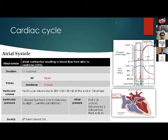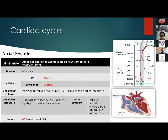Ventricular pressure first increases due to blood moving from the atrium to the ventricle, then slightly decreases. Atrial pressure initially increases due to atrial systole, then decreases due to venous return. This correlates to the fourth heart sound. In patients with atrial fibrillation, this phase is absent. In patients with left ventricular lack of compliance, such as left ventricular hypertrophy or hypertension, the fourth heart sound will be prominent.